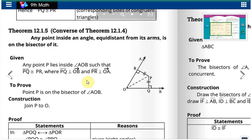So theorem number 12.1.5: Any point inside an angle equidistant from its arms is on the bisector of it. So converse is 12.1.4.